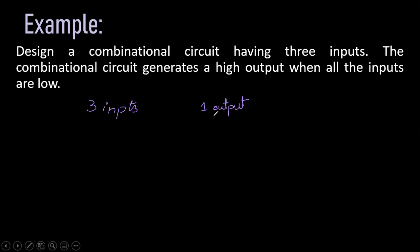The output is high when all the inputs are low. For three inputs, we will have how many combinations? Two raised to the power three — we will have eight different combinations. From these eight different combinations, we will generate a high output only when all the inputs are low.